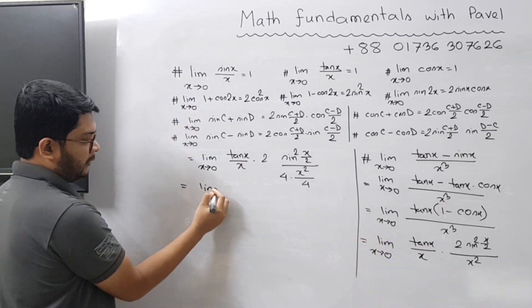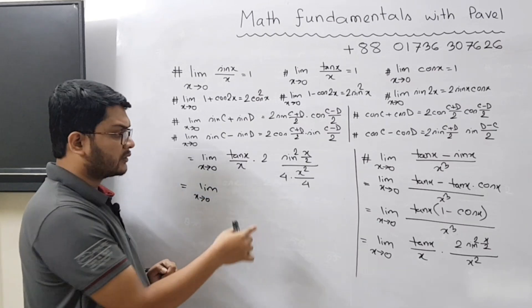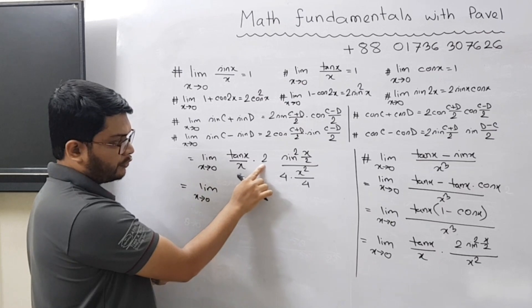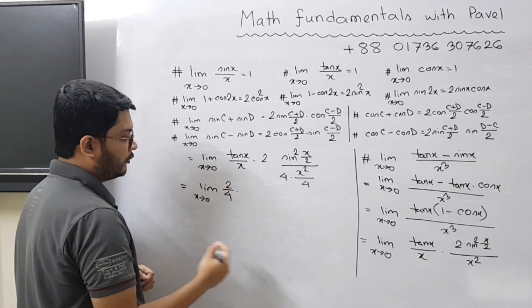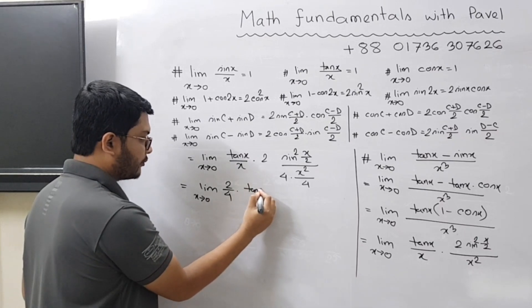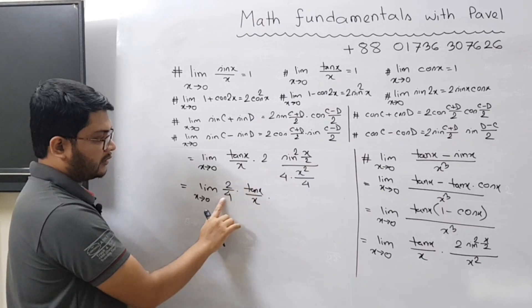Now limit x tends to 0—we keep all the constants at the beginning. So you have 2 here and this 4, so this is 1/4. So 2/4 comes in the beginning, and you have tan x by x—this part has already been brought in the beginning.